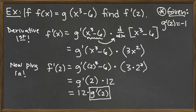then we can complete this problem. Because given that g prime of 2 is negative 1, this would just be 12 times negative 1, which would be negative 12 to give us our final answer there.